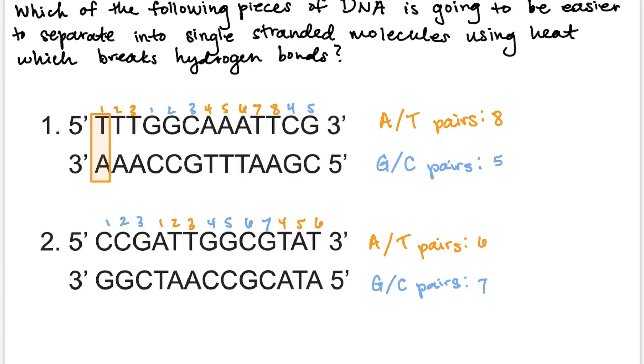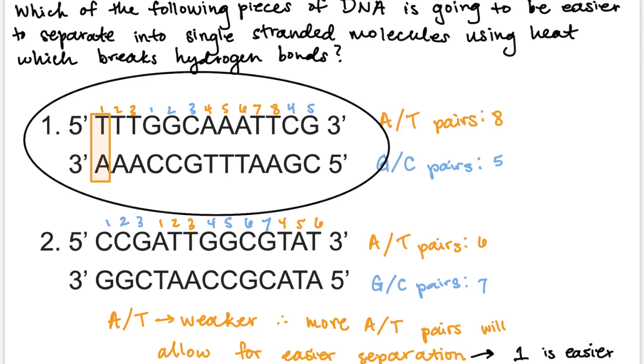This question is asking which molecule is going to be easier to break. We know from the previous information that the AT pairs are going to be weaker, so more AT pairs will allow for easier separation. Because the first DNA molecule has eight AT pairs and the second molecule has six AT pairs, the first one is going to be easier to break.